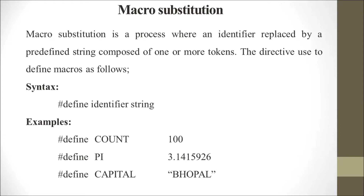The directive used to define a macro uses the syntax: #define identifier string. For example, #define COUNT 100 assigns the value 100 to COUNT. Another example is #define PI 3.14159265, which assigns that value to PI.